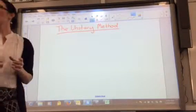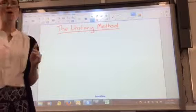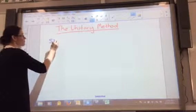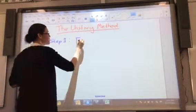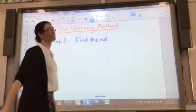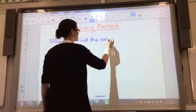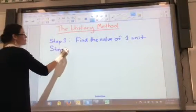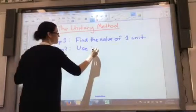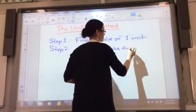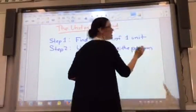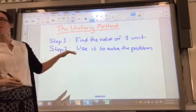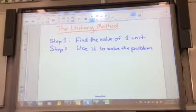Okay, so the unitary method is where we are trying to find the size of one unit and once we have that, we use that to solve the problem. So our first step is to find the value of one unit. Are we writing this? Yes, we are. Our second step is to use it to solve the problem. Now we use this method for percentages in the last topic. Today we're going to look at how we can use this method for ratio questions and for rate questions.